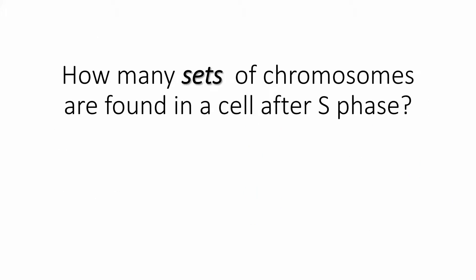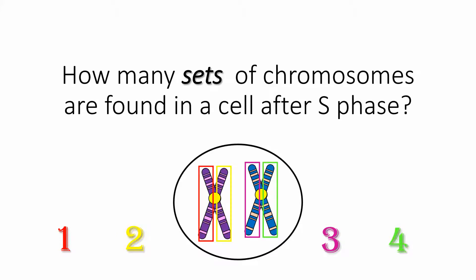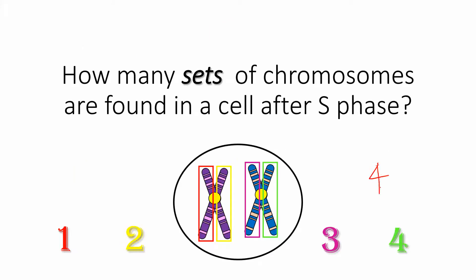After S phase — the synthesis phase during which a cell produces DNA — let's count how many sets of chromosomes there are. We have a pair of homologous chromosomes, each consisting of a duplicated pair of sister chromatids. Counting sets: one, two, three, four. After replication before meiosis, you actually have a 4N cell with four separate sets of chromosomes. By the time we finish, you're going to have four single separate cells each with a single set of chromosomes — four 1N cells.